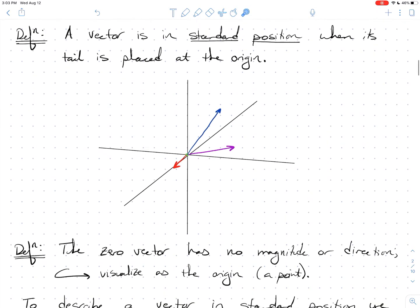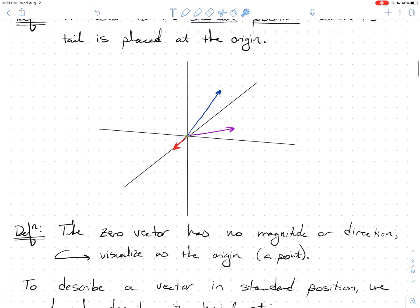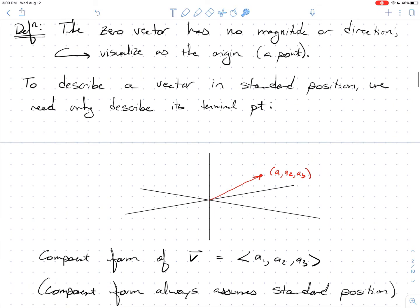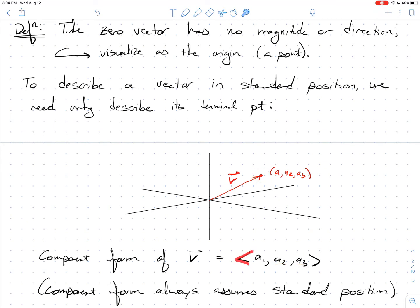Once we've put a vector in standard position — with its tail at the origin — we need only describe its terminal point to fully capture its length and direction. This is what's called the component form of a vector. V with an arrow on top indicates that it's a vector and not a scalar. The component form simply writes down the coordinates of the terminal point inside angle brackets.